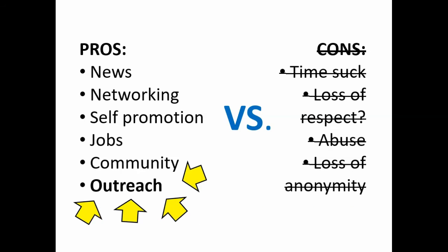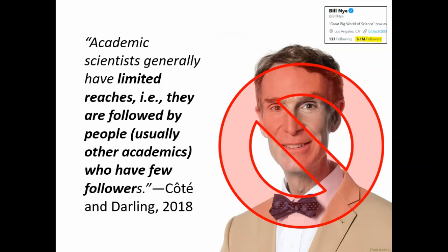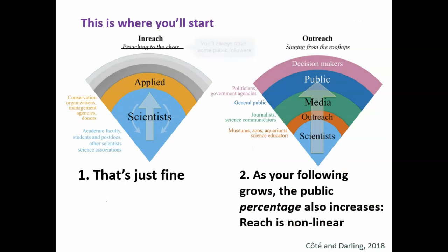Okay, you've committed and you're going to be an outreach master. In fact, you're going to be the next Bill Nye. Reality check — you're not. The average scientist has followers in the hundreds. Only a small percentage break the 1000 mark, and a truly infinitesimal number will get beyond that. But that's okay. Even if you start with mostly your peers, you're communicating, and you'll benefit from that exchange. As you continue posting, your following will grow, and with it, your public reach and impact.